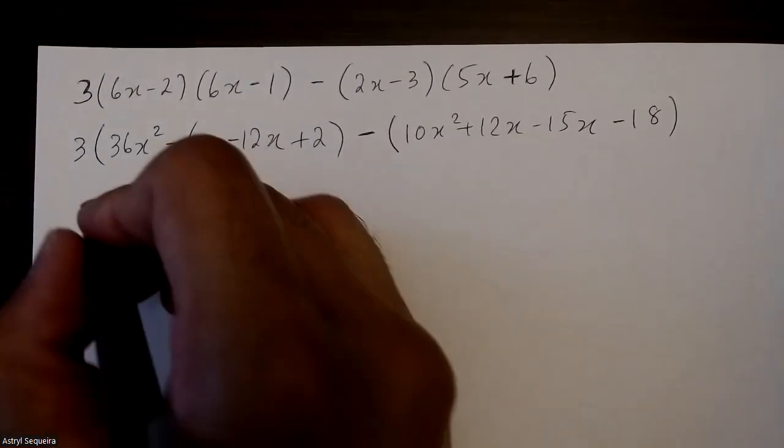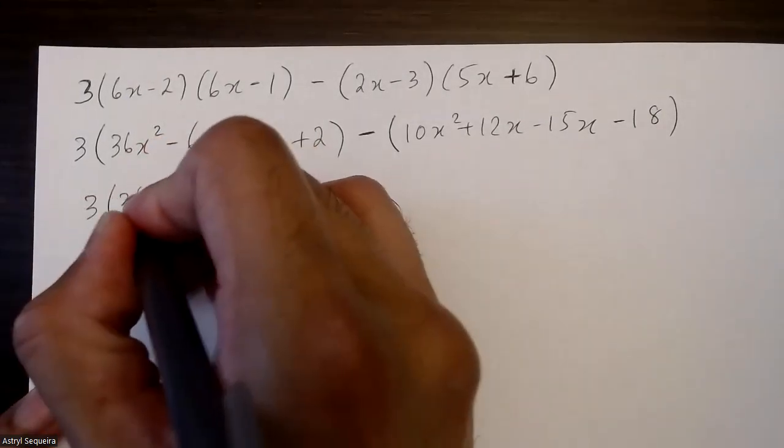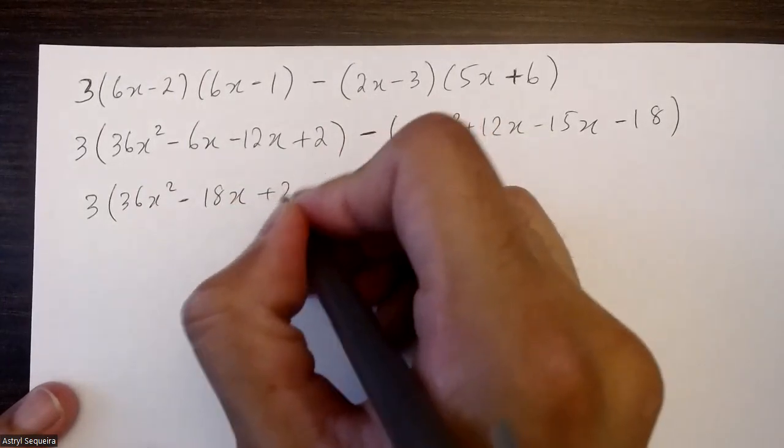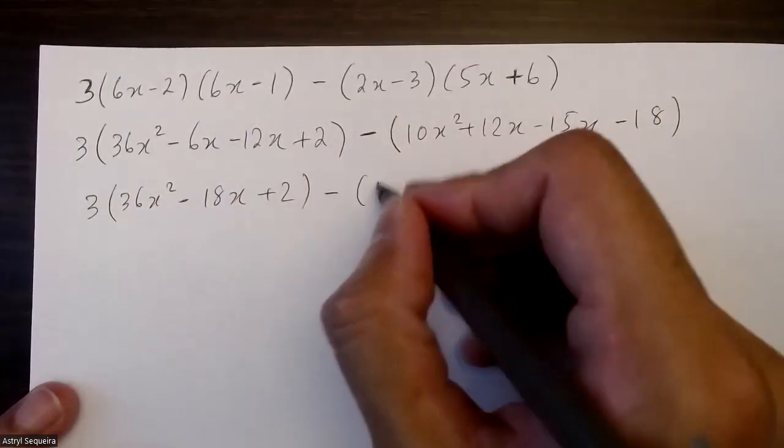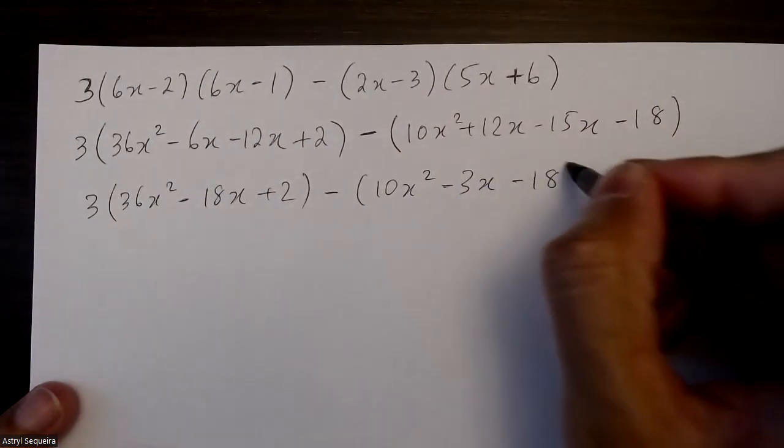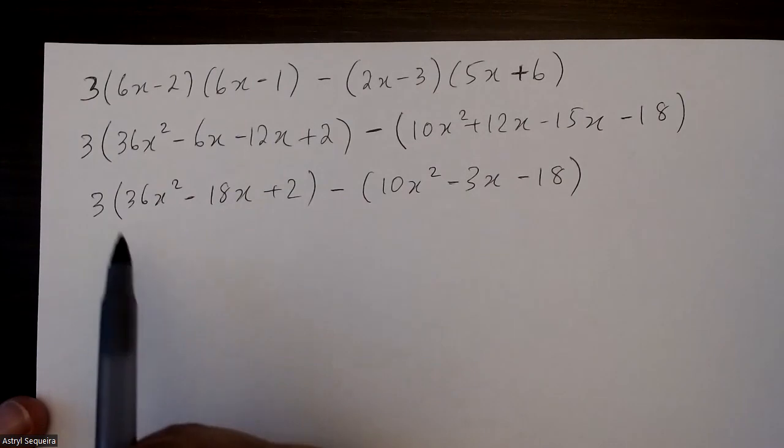So 3 times 36x squared minus 18x plus 2, minus 10x squared minus 3x minus 18.